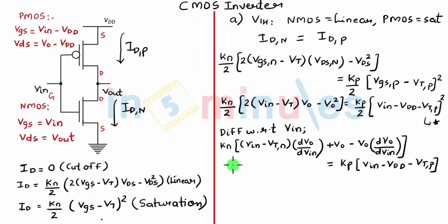Now we'll substitute DVout by DVIN equal to minus 1 and we'll also substitute VIN equal to VIH because we are trying to identify the value of VIH. Let's rewrite this equation. That is KN, DVout by DVIN is minus 1, remember that...